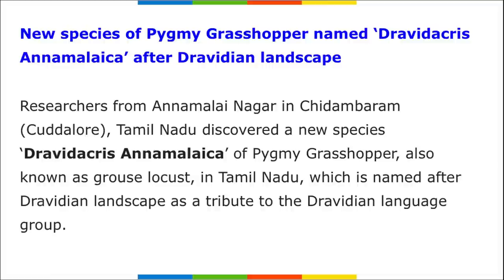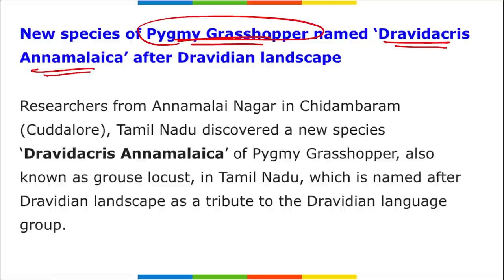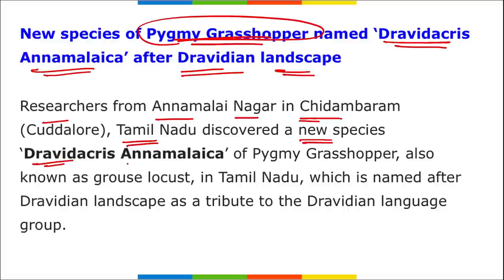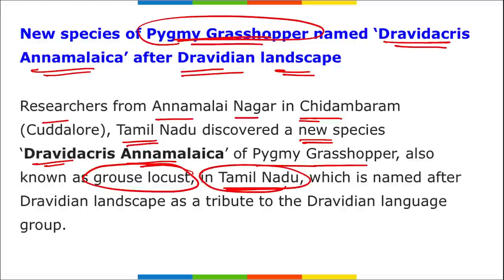Researchers from Annamalai Nagar in Chidambaram, Tamil Nadu have discovered a new species of pygmy grasshopper, also known as grouse locust, named Dravidiaris annamalaica. The species was named after the Dravidian landscape and was found in Tamil Nadu.